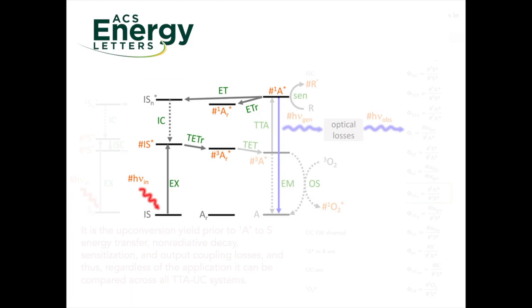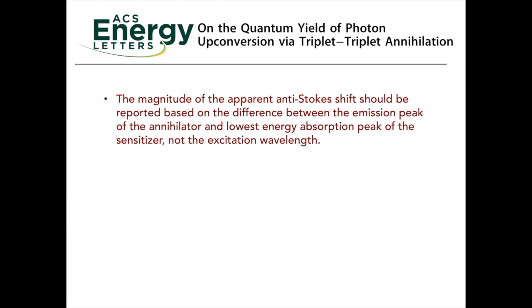As an aside, we have three additional comments regarding the standardization in the TTA-UC literature. First, it is more appropriate to describe sensitizer absorption and upconverted emission as an apparent anti-Stokes shift. The magnitude should be reported based on the difference between the emission peak of the annihilator and the lowest energy absorption peak of the sensitizer, not the excitation wavelength.